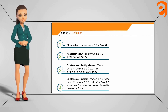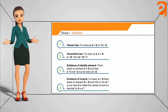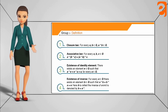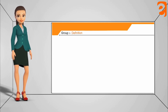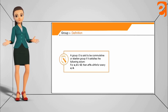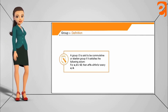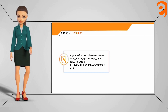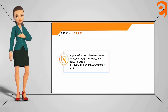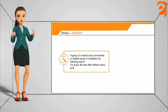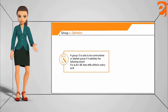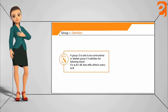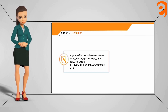When the set G with these four properties also satisfies a star b equals b star a — meaning the binary operation is commutative — we call it a commutative group. This is also called an abelian group. An abelian group and a commutative group are one and the same thing.